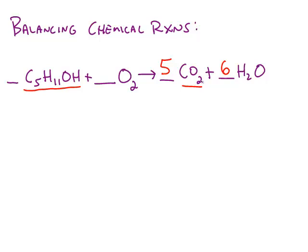So if I count on the product side, five carbon dioxide contains ten oxygen atoms and six waters contains six more, so that's a total of 16 oxygens on the product side.